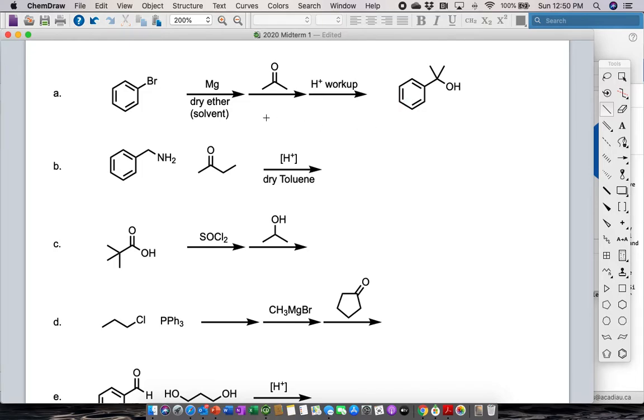We can remember that Grignard reagents—first of all, as soon as we see magnesium, we want to remember Grignard reagents. Then we can remember that Grignard reagents react with ketones to give tertiary alcohols.